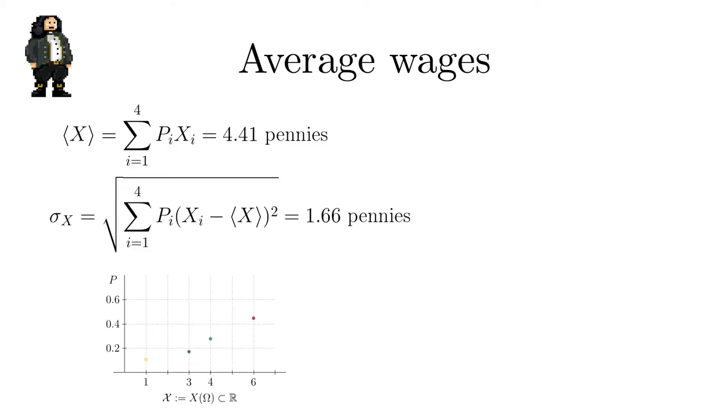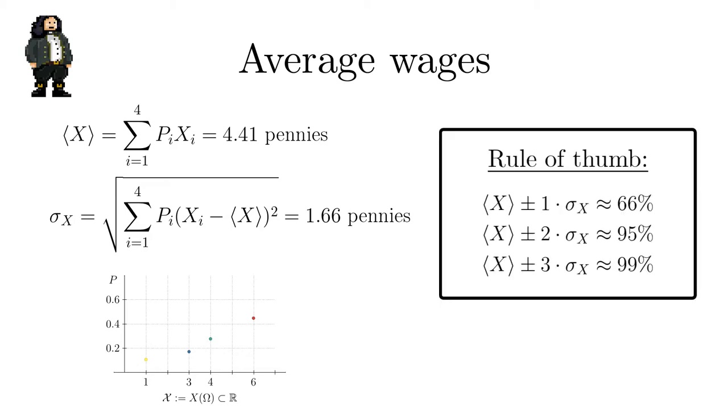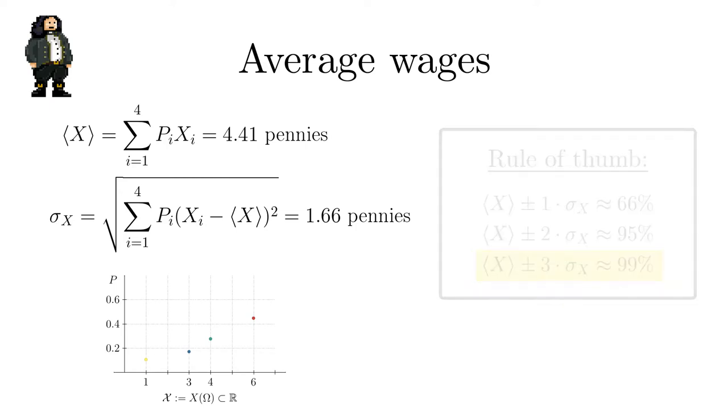Bernoulli computes the mean of the distribution that uses pennies as random variables which results in approximately 4.4 pennies a day. The scatter of the wages is given by the standard deviation sigma which in the present example is 1.66 pennies. A rule of thumb for most distributions is that you can find about two-thirds of all outcomes within the one sigma interval. For the two sigma interval it's roughly 95% and the three sigma interval covers almost 99% of all cases.